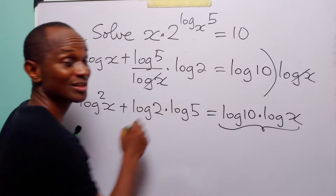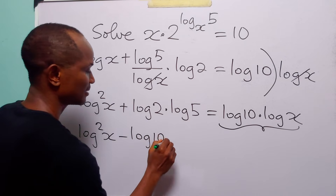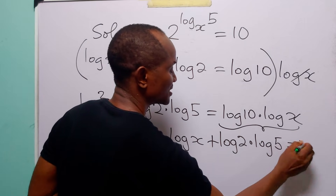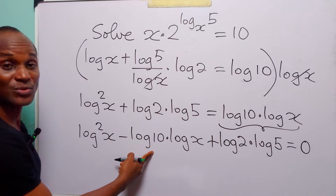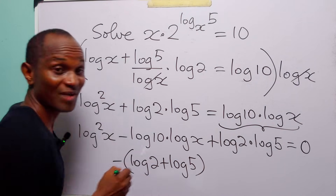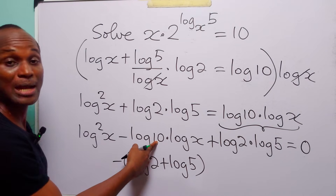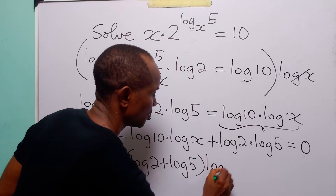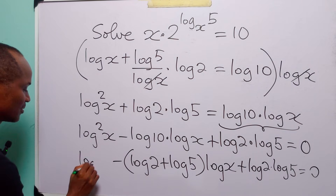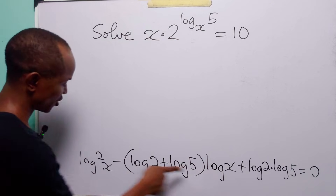Now let us bring this term over to the left-hand side. When we do that, we have log squared x minus log 10 times log x plus log 2 times log 5 is equal to 0. Now we can write log 10 as log 2 plus log 5, since 2 times 5 equals 10. So we still have log squared x, minus log x, plus log 2 times log 5.